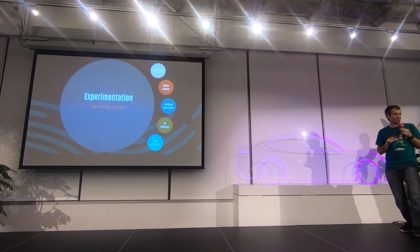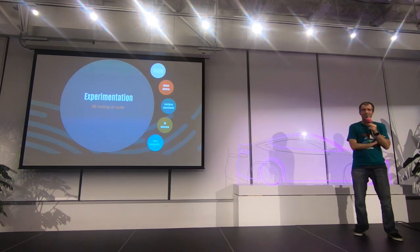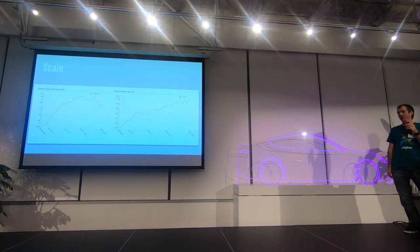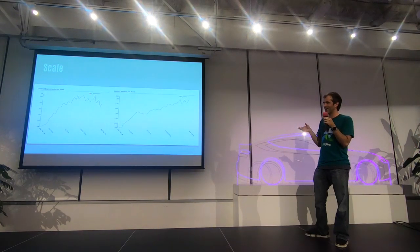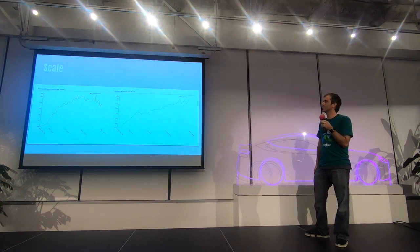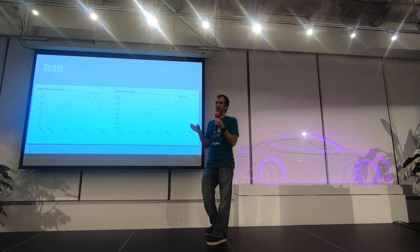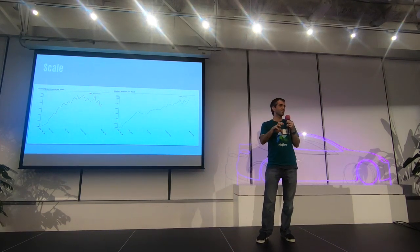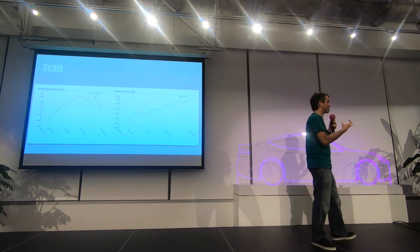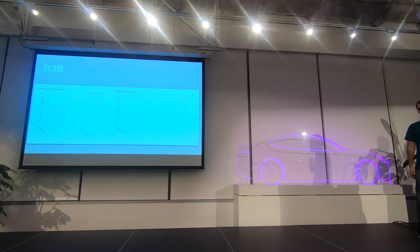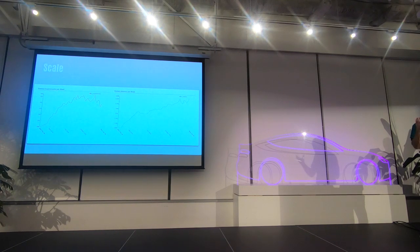Next, a deeper dive into experimentation — largely based on how it's done at Airbnb using Airflow. At the time this slide was made, Airbnb was running a few hundred experiments. This chart represents the number of metrics used at Airbnb. When you run an experiment, you pick core metrics and perhaps metrics specific to your experiment. In places like Facebook, they run thousands and thousands of experiments at any point in time and compute all sorts of metrics.